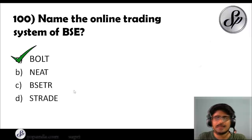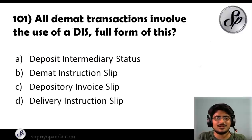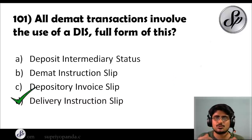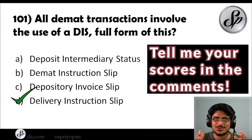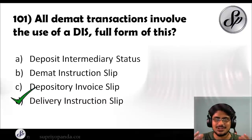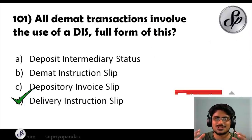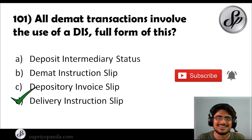Question one hundred: name the online trading system of BSE. The answer is BOLT — BSE Online Trading System. Question one hundred and one: all demat transactions involve the use of a DIS. What is the full form? It is Delivery Instruction Slip. These are issued by DPs — depository participants. We have come to the end of the session. Write down your scores in the comments below, like this video if you enjoyed it, share it with your friends, and please subscribe for more such content in the future.